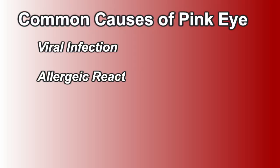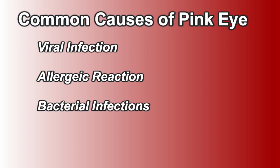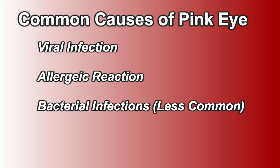The most common causes of conjunctivitis are often viral infections, allergies, and less commonly bacterial infections. There are non-infectious causes as well, but they're often much less common and usually self-limited. Today we're going to be focusing on those bacterial, allergic, and viral causes of conjunctivitis and talking about the signs and symptoms of these types of infections.